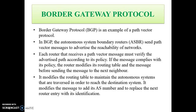Border Gateway Protocol (BGP) is an example of a path vector protocol. In BGP, the Autonomous System Boundary Routers (ASBR) send path vector messages to advertise the reachability of networks. Each router that receives a path vector message must verify the advertised path according to its policy. If the message complies with its policy, the router modifies its routing table and the message before sending it to the next neighbor. It modifies the routing table to maintain the autonomous systems traversed to reach the destination, and modifies the message to add its AS number and replace the next router entry with its identification.